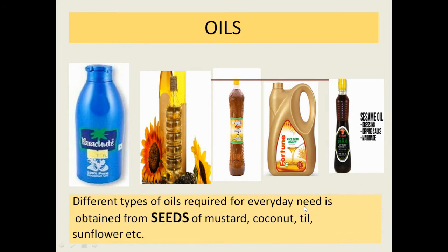Next is oils. Different types of oil required for everyday needs are obtained from seeds of the mustard plant, coconut plant, tail plant, sunflower, etc.